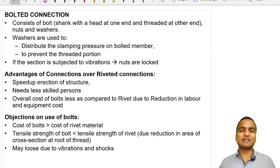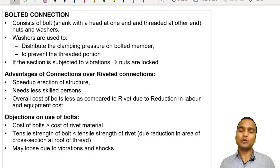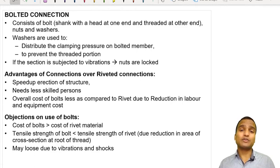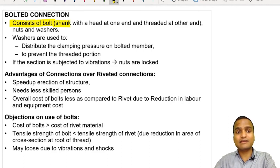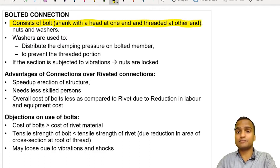Hello dear students. After understanding thoroughly about riveted connections, we now come to bolted connections. If we look in any sphere of our life, we encounter bolted connections everywhere. In a bolted connection, it mainly consists of a bolt, which has a shank like a rivet with a head at one end and threading at the other end, along with nuts and washers.